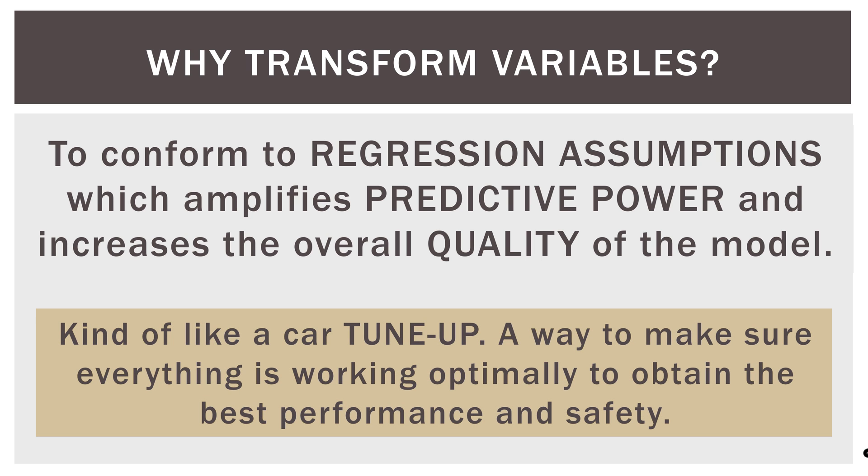The metaphor I use is like tuning up your car. Your car can have a low tire, a bulb out in the tail light, a bad windshield wiper or something like that. Will the car still run? Absolutely. Is it running and operating optimally? Well, no. So what we're trying to do by transforming variables is to bring all of our variables into compliance, into conformity with what the regression technique actually wants. We're not changing the variables. We are just transforming them mathematically in a way that aligns them better with regression assumptions.